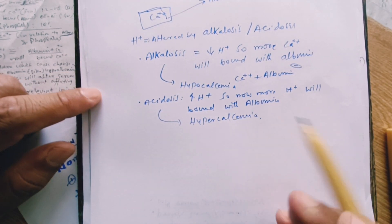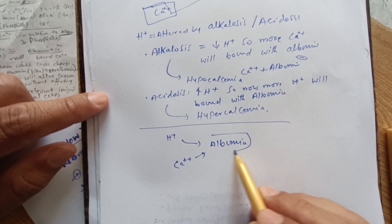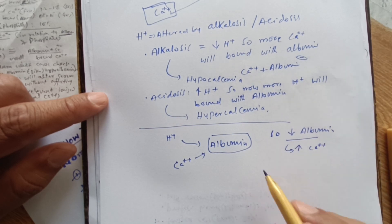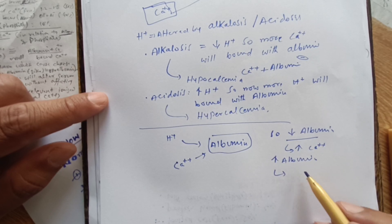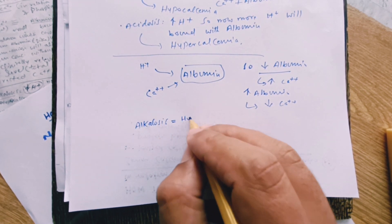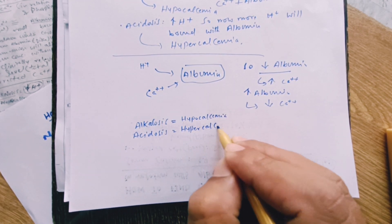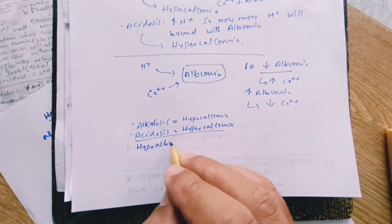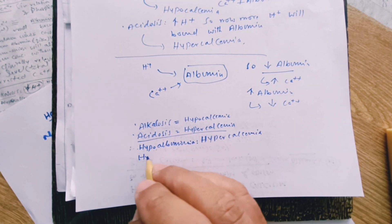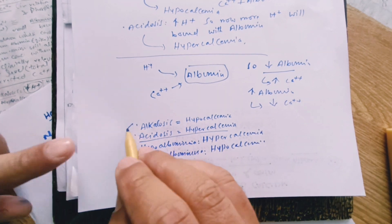If we disturb the value of albumin, the serum calcium value will be altered. In hypoalbuminemia, there will be an increase in ionized or free calcium. Increased albumin will cause a decrease in calcium — hypocalcemia. So: alkalosis causes hypocalcemia, acidosis causes hypercalcemia, hypoalbuminemia causes hypocalcemia, and hyperalbuminemia causes hypocalcemia.